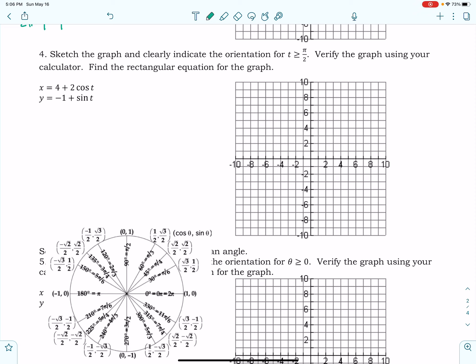Okay, in this video we're going to talk about parametric equations. We're going to look at example 4 in our unit 11 notes. We're not going to graph these in our calculator, but we are going to sketch the graph, clearly indicating the orientation for t greater than or equal to pi over 2.